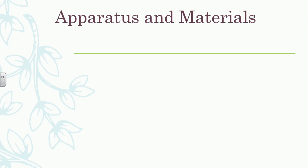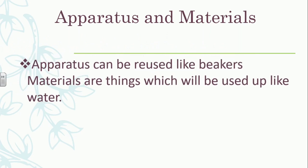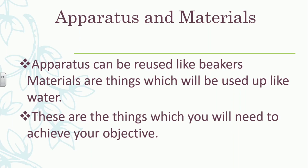Now onto your apparatus and materials. Your apparatus are things that you can reuse, like your beaker, measuring cylinder, pipette — these can be reused from week to week. Your materials are the chemicals you use; you can't reuse those. Filter paper, for example, can't be reused — once you use it, it's done. That's the distinction. Your apparatus and materials are simply the things you're going to need to achieve your objective.